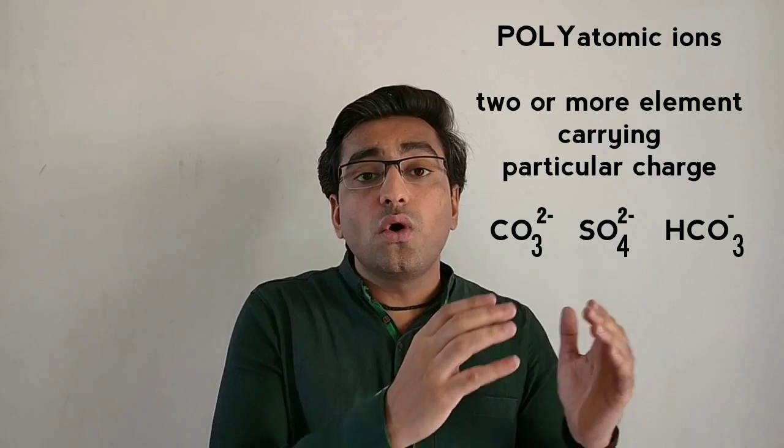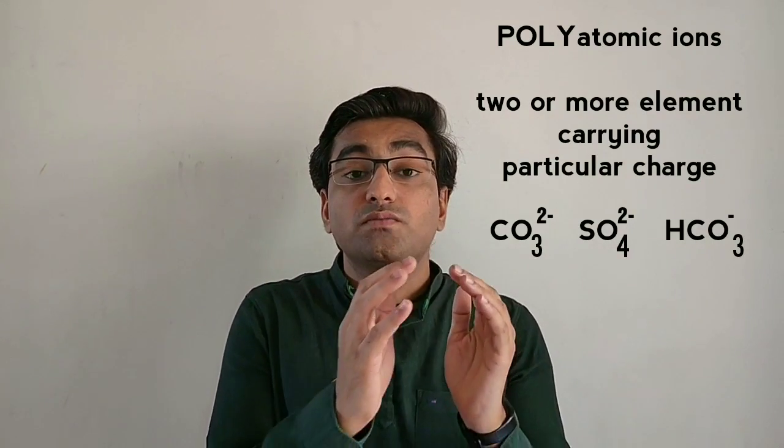Polyatomic ions are ions in which there are two or more elements carrying a particular charge. For example, carbonate ion CO₃²⁻ — carbon and oxygen both carry a minus two charge. Similarly, sulfate ion is SO₄²⁻, and bicarbonate ion is HCO₃⁻. So based upon the elements present, ions can be classified into two: monoatomic ions and polyatomic ions.